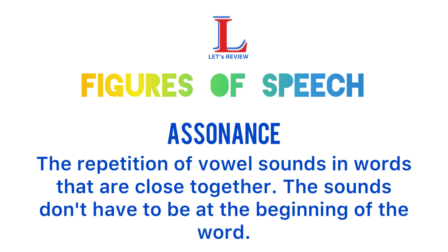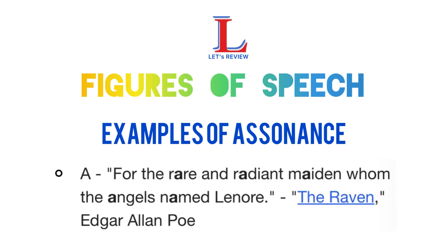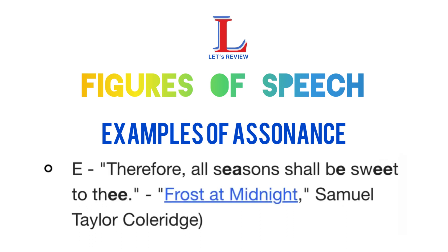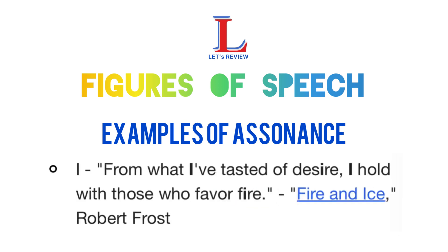Assonance is the repetition of vowel sounds, not just letters, in words that are close together. The sounds don't have to be at the beginning of the word. Some examples include — A: for the rare and radiant maiden whom the angels named Lenore — The Raven, Edgar Allan Poe. E: therefore all seasons shall be sweet to thee — Frost at Midnight, Samuel Taylor Coleridge. I: from what I've tasted of desire, I hold with those who favor fire.